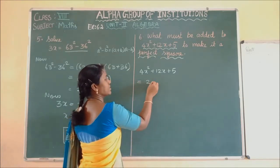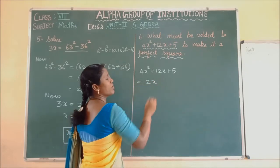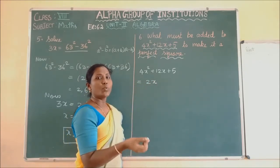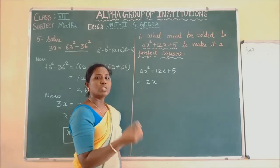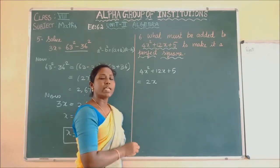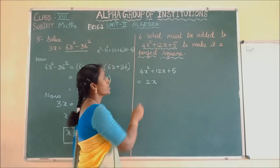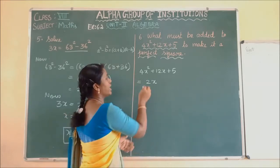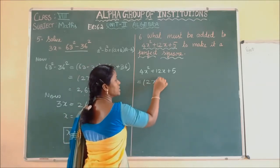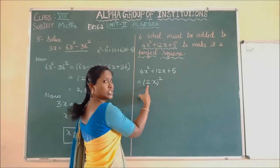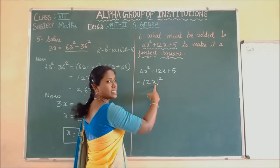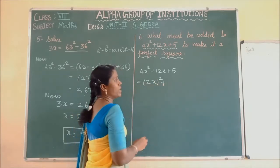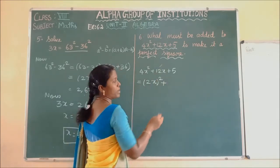I am going to compare this expression with A plus B whole square, which expands to A square plus 2AB plus B square. The first term 4X square can be written as 2X whole square, so A equals 2X. For the middle term 12X in the form of 2AB, we get 2 into 2X into B equals 12X, so B equals 3.